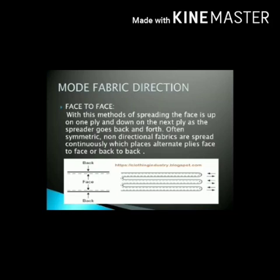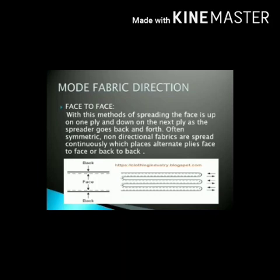Mode fabric direction: face-to-face. With this method of spreading, the face is up on one ply and down on the next ply. As the spreader goes back and forth, often symmetric non-directional fabrics are spread continuously, which places alternate plies face-to-face or back-to-back. Symmetric means made up of exactly similar parts facing each other. These plies — several fabric layers — take alternating positions with their face-to-face or back-to-back orientation.